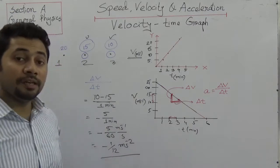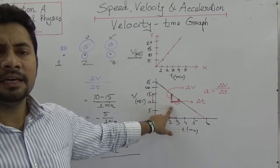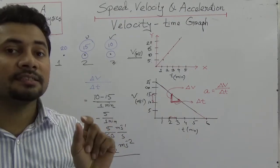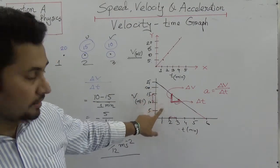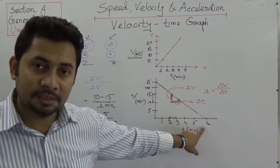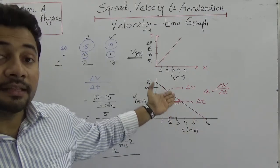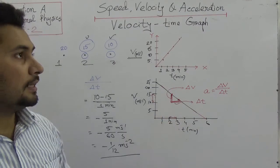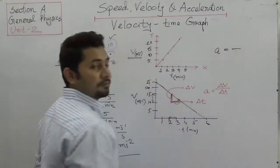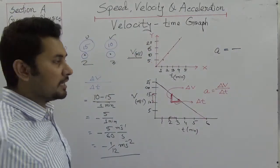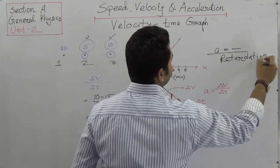From the graph we know what changes happen in a specific time — that is called instantaneous velocity. We can see this graph is given for a car moving for six minutes. In this time the velocity was decreasing, and this decreasing velocity shows that A is negative. This negative acceleration expresses retardation, or deceleration.